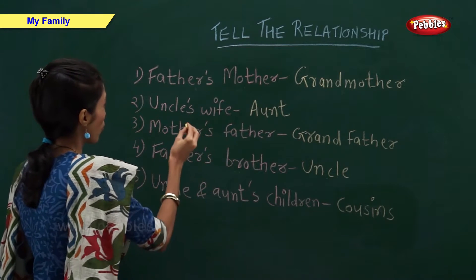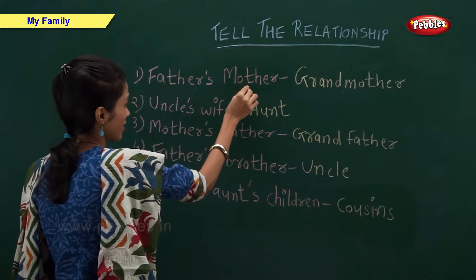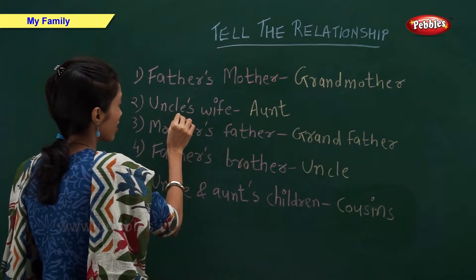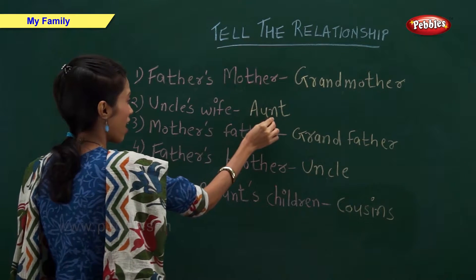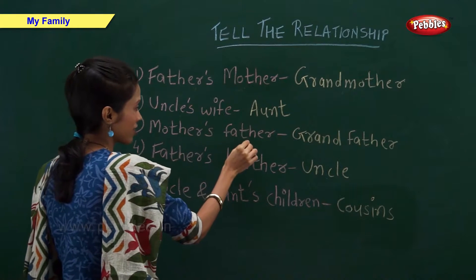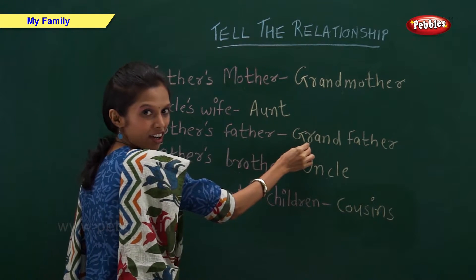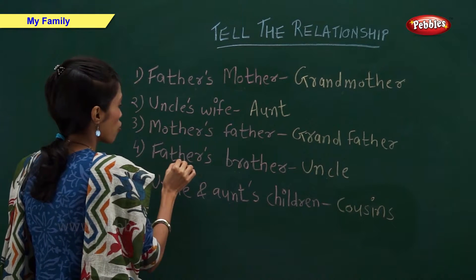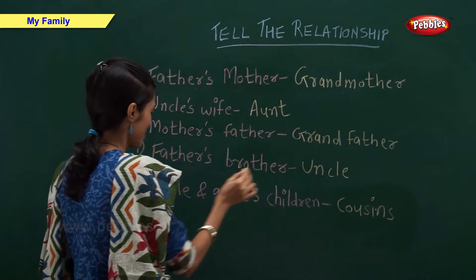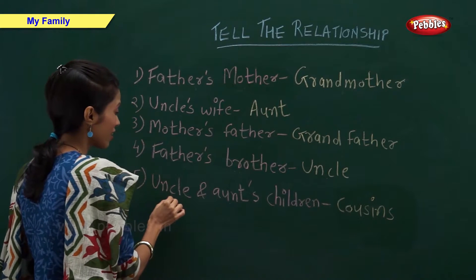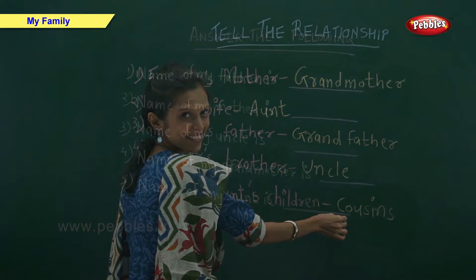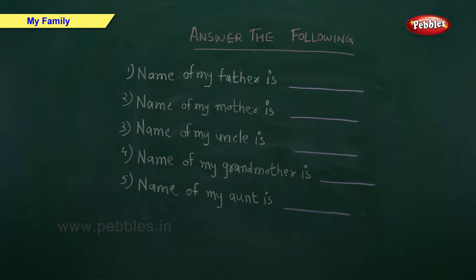So, father's mother is called as grandmother. Uncle's wife is called as aunt. Mother's father is called as grandfather. Father's brother is called as uncle. Uncle and aunt's children are called as cousins. Answer the following.